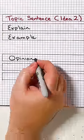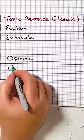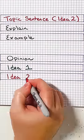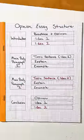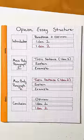Conclusion: restate your opinion and summarize your two main ideas. And that's how to write an opinion essay.